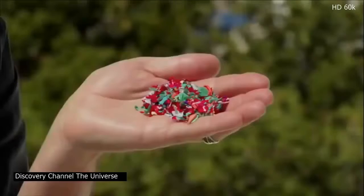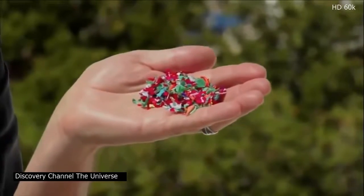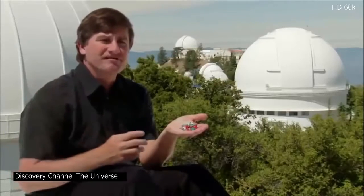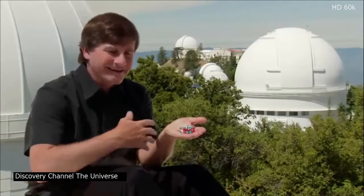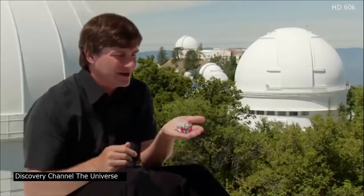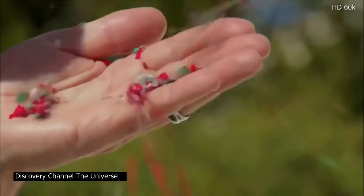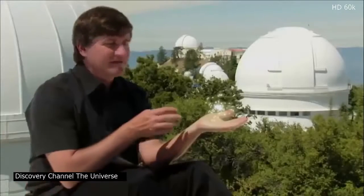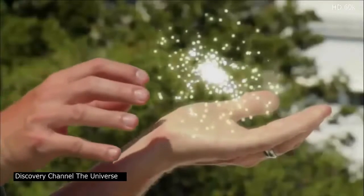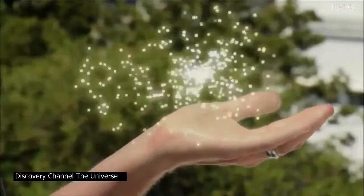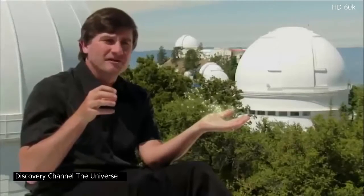A star cluster is kind of like this pile of confetti on my hand. Gravity gradually pulls the stars away and disperses the cluster. Well, I can blow on this pile of confetti and disperse the pile. Let's do it. Now, if this were a star cluster instead of a pile of confetti, then gravity would be the agent that gradually pulls the stars away, dispersing the cluster over time until there's little, if anything, left.